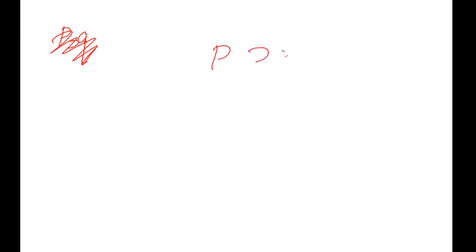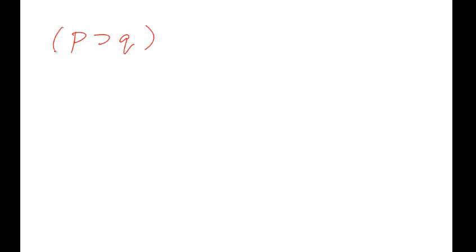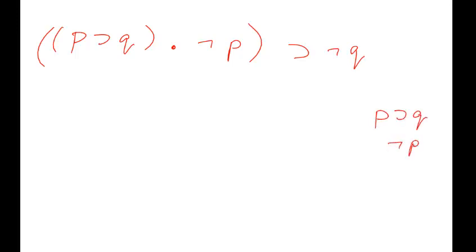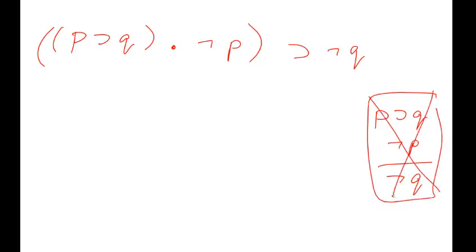Let's do an example: denying the antecedent, which is a fallacy. The pattern is: if P then Q, not-P, therefore not-Q. For instance: if I run a marathon, then I'll be tired; I didn't run a marathon; therefore I'm not tired. That's a bad pattern of reasoning — let's prove it's bad by running the truth table for (P→Q) ∧ ¬P → ¬Q.